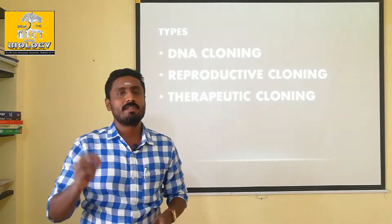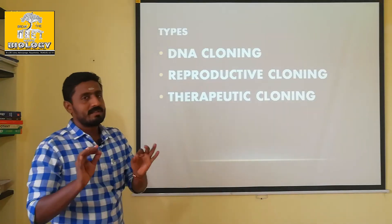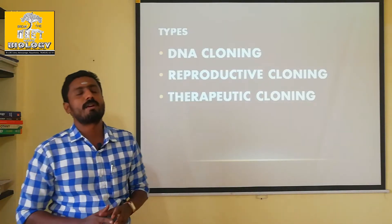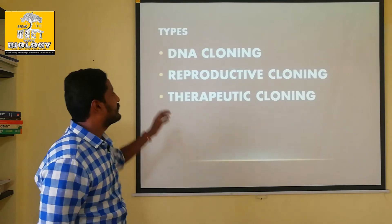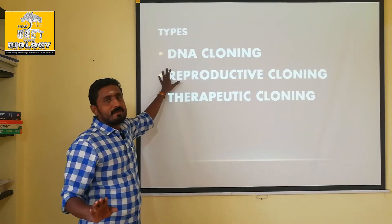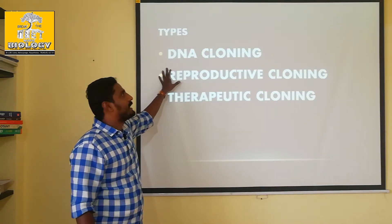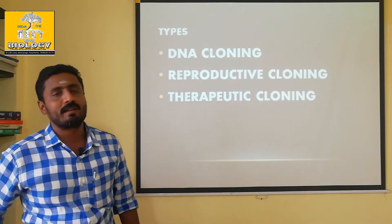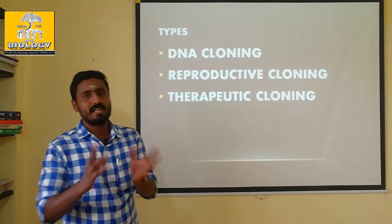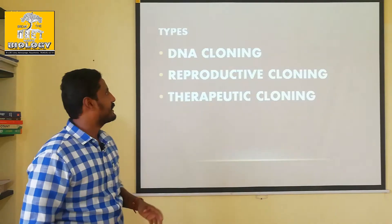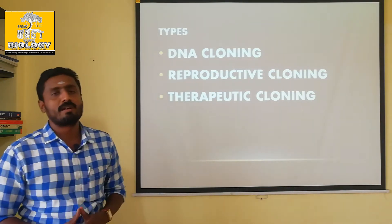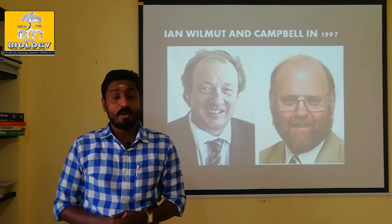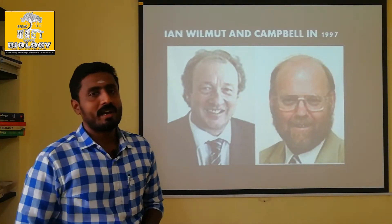We multiply the bacteria and multiply the DNA — this is called DNA cloning. This is now widely accepted. You can see that recombinant DNA technology has no restrictions or banning. The recombinant DNA has no restrictions — it is accepted based on recombinant DNA technology.